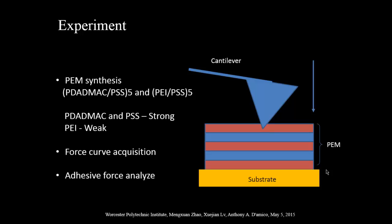The polyelectrolyte multilayers we use are PDID-MAC with PSS for five bilayers, and PEI with PSS for five bilayers. PDID-MAC and PSS are both strong polyelectrolytes, and PEI is a weak polyelectrolyte.